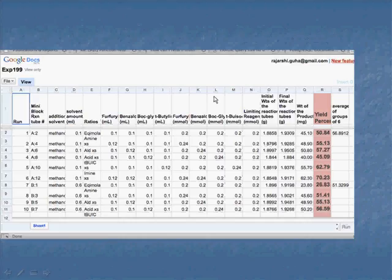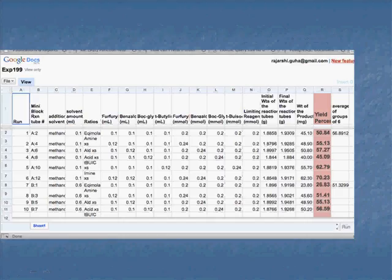And in the spirit of openness, we use Google Docs and we can just copy the Google Docs to the Mettler Toledo software so that the person who's running the Mettler Toledo software doesn't necessarily have to know the experimental design to be able to provide the results.